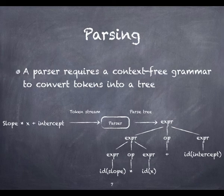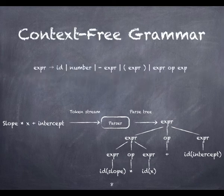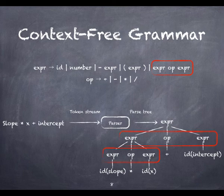Parsing relies on a set of potentially recursive rules known as context-free grammar. For example, these are the rules used to convert slope times x plus intercept into a parse tree. As you can see here, an expression can be defined recursively as two sub-expressions joined by an operation, which is exactly what happens here and here.